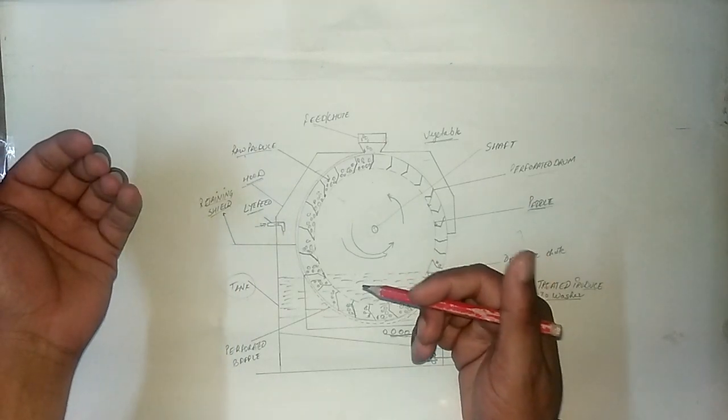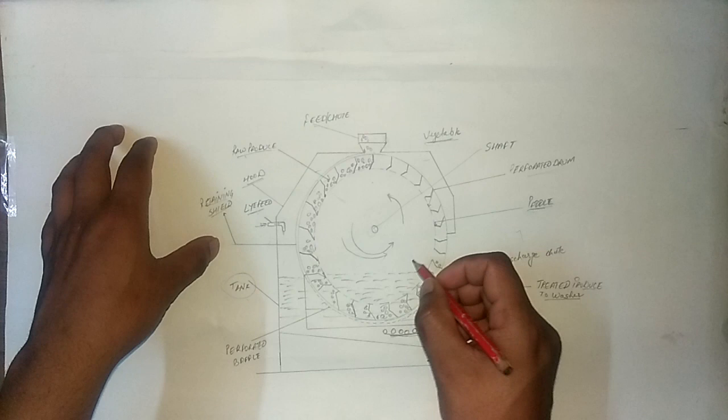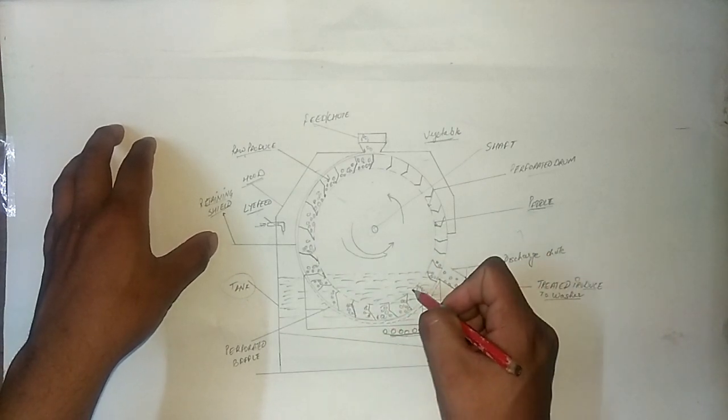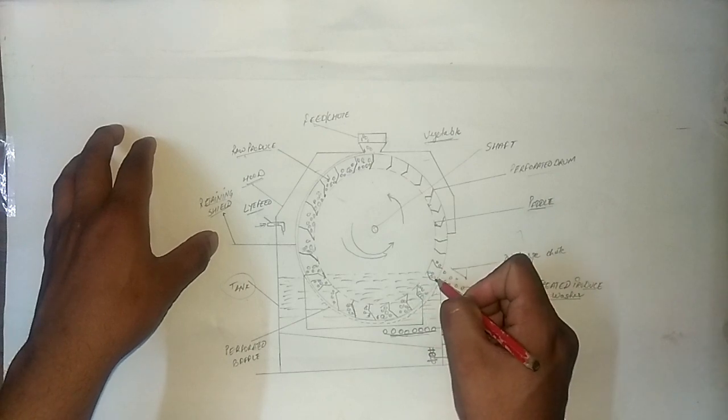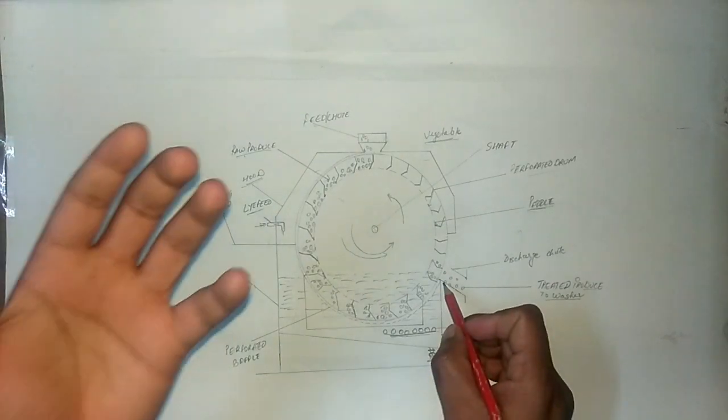It depends on the temperature for potatoes and carrots. After the heat, the outer skin is loose. It is soft after the heat.